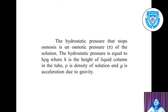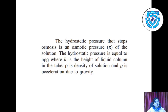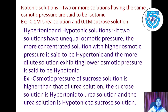The hydrostatic pressure that stops osmosis is the osmotic pressure, denoted by pi. The hydrostatic pressure is equal to h·ρ·g, where h is the height of the liquid column in the tube, ρ is the density, and g is the acceleration due to gravity.